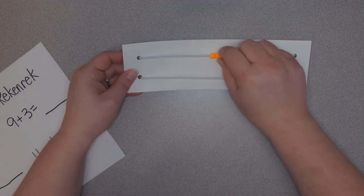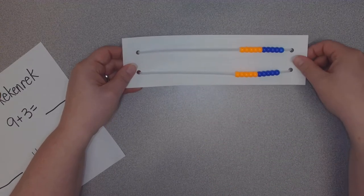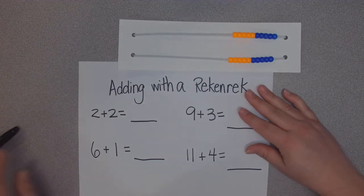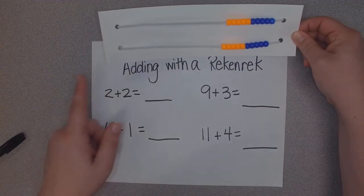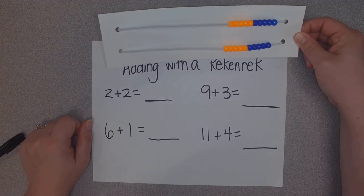We're going to push all the little beads over to the right hand side so we can get ready. Adding with a Rekenrek is pretty straightforward, we just need to build it on here and then count up what we have.